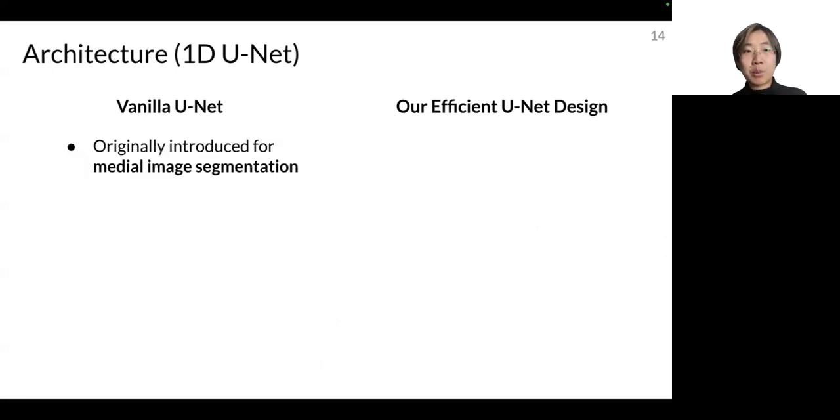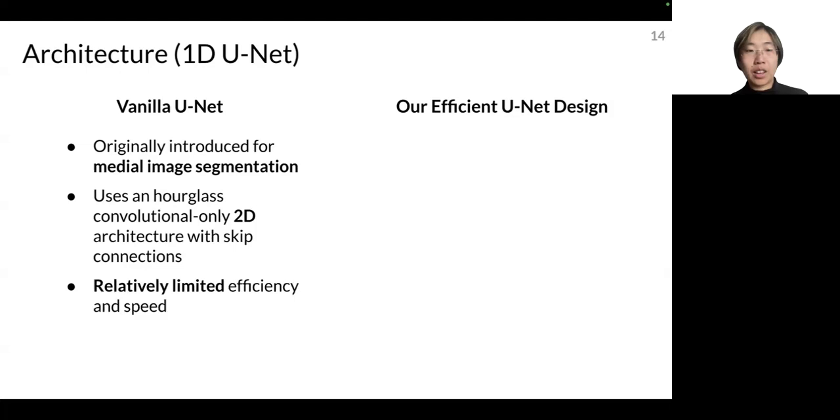And the unit layer that each layer structure that we have is a 1D U-net. So we will introduce how our efficient U-net design differs from vanilla U-net. So in the original proposal of U-net, it was introduced for medical image segmentation. It uses an hourglass convolutional only architecture with skip connections. It has relatively limited efficiency and speed.